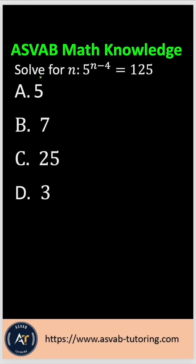So the question asked here: solve for n where 5 to the power n minus 4 equals 125.